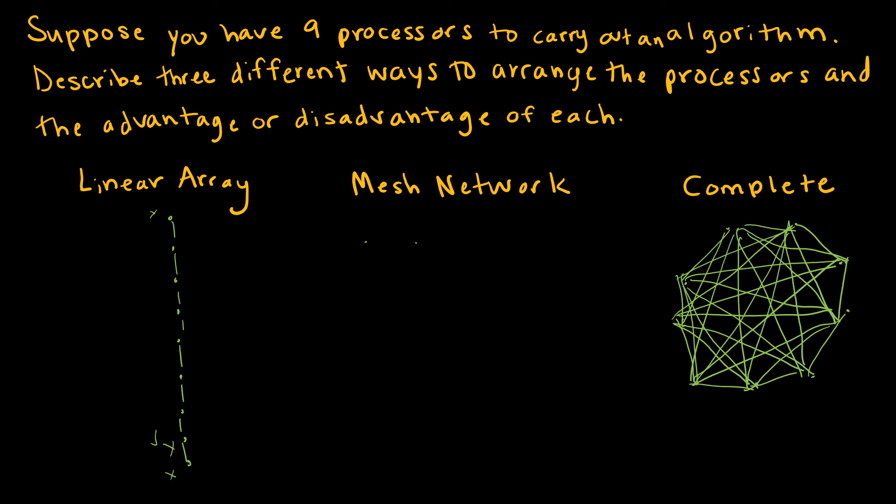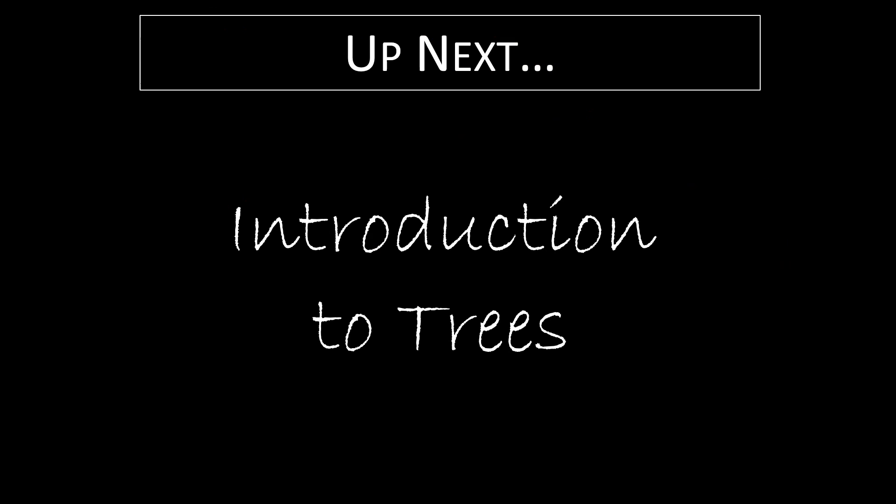So a mesh network is actually a really good way to go, which cuts down on the fact that it's not linear, but we still have a lot of extra connections. So we can sort of partition out the work into different processors to get the work done more quickly. So mesh network is a better way to go. Coming up next, we're going to introduce a special kind of graph known as a tree.